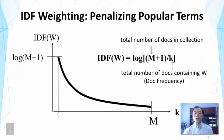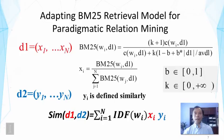So how can we add these heuristics to improve our similarity function? Well, here's one way, and there are many other ways that are possible. But this is a reasonable way where we can adapt the BM25 retrieval model for paradigmatic relation mining. So here we define the document vector as containing elements representing normalized BM25 values.